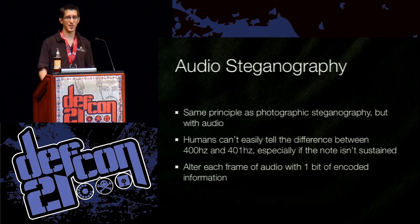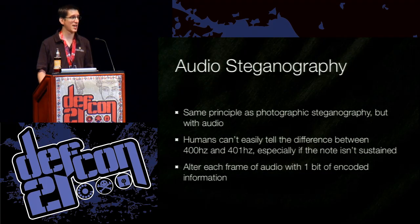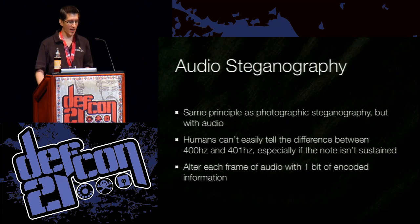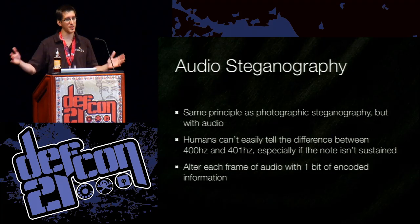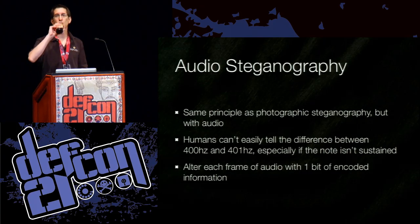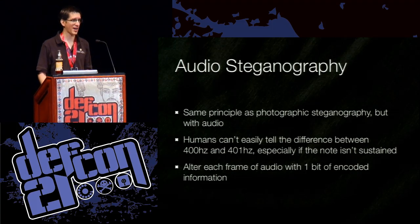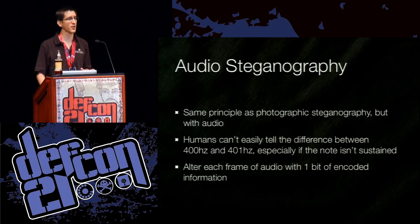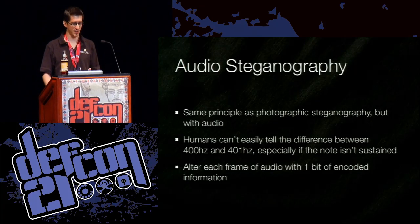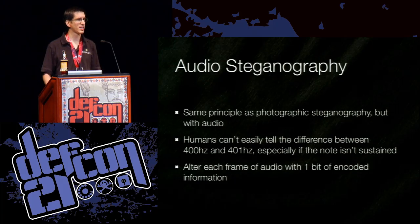Audio steganography is a similar concept to photographs, but it uses sound. It's based on the fact that humans can't tell the difference between 400 Hz and 401 Hz, especially if the note isn't sustained for a long time. After each frame of audio, one bit is encoded in that frame. If you've got a bunch of audio frames, you can encode a bunch of bits and you've got your message. If you're interested in this, I urge you to look at John Ortiz's work — he's a presenter at Black Hat. His presentations go a lot further into both photograph and audio steganography, using more than just one bit, with some really neat math tricks.